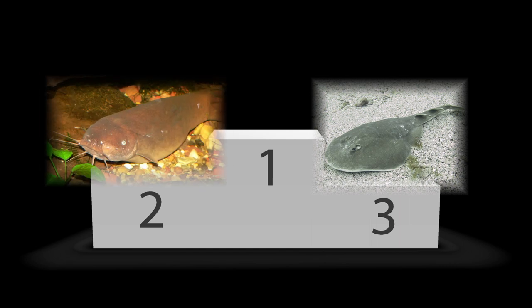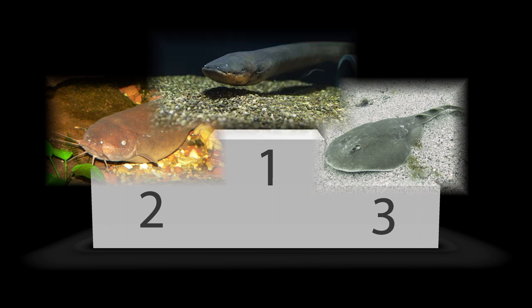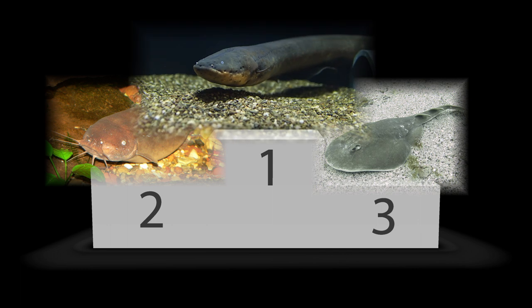Electric rays and electric catfishes can also make electricity strong enough to kill their prey, just like the electric eel. But eels are the best with the most powerful shocks.